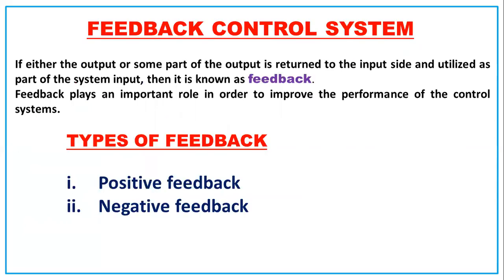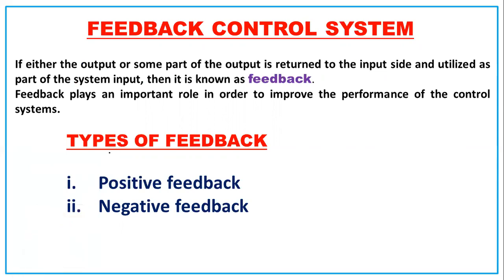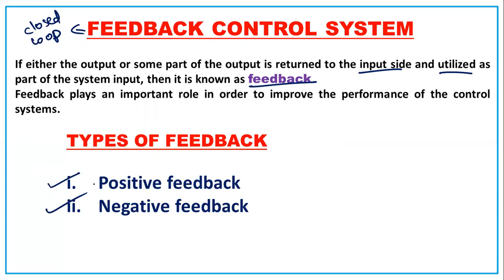Feedback means it is a closed loop system. If either the output or some part of the output is returned to the input side and utilized as part of the system input, that is called feedback. Feedback plays an important role in improving the performance of the control system. There are two types: positive feedback and negative feedback.